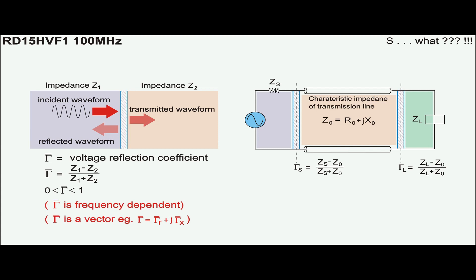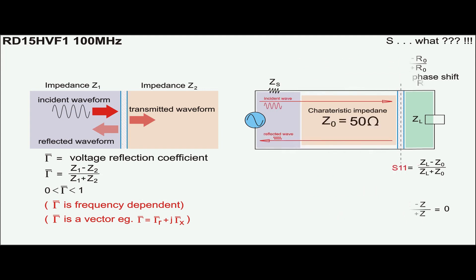If the impedance of the transmission line and the load are pure resistive, a condition called lossless transmission line occurs. Also, if impedance of source and load are equal to Z0, a condition called match impedance occurs.